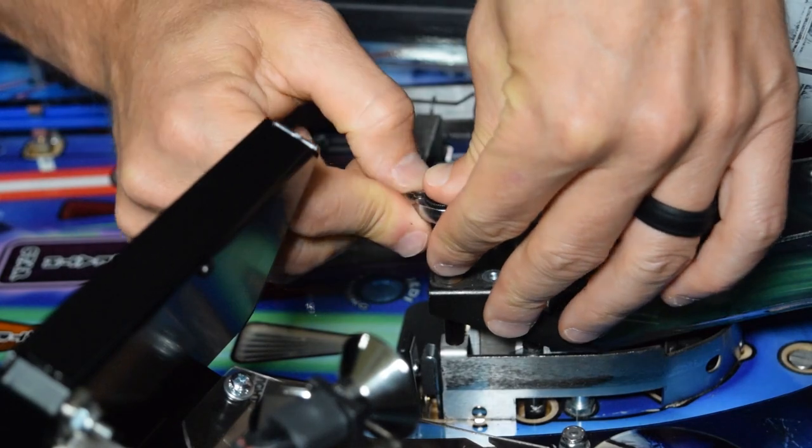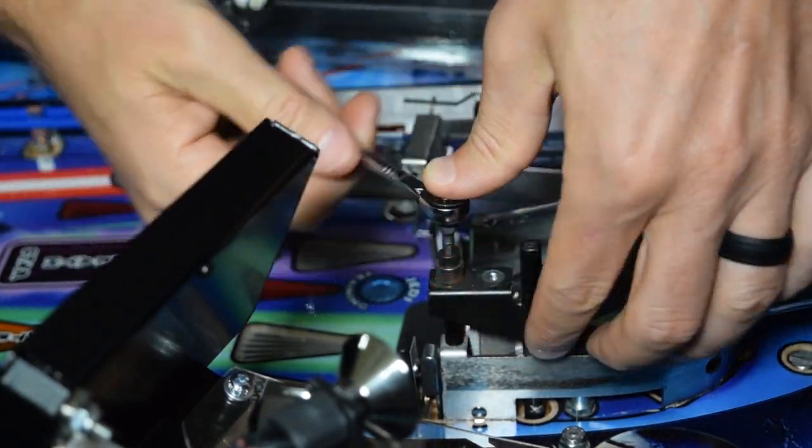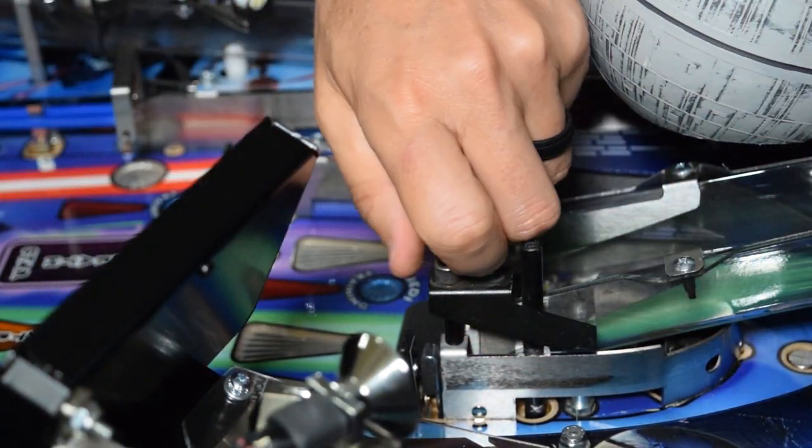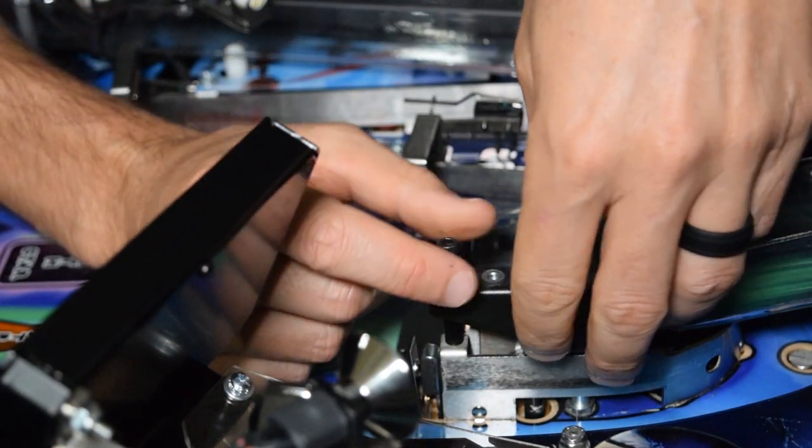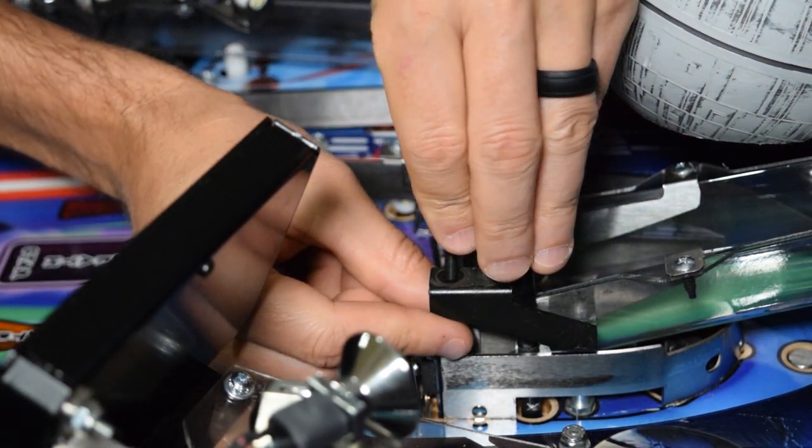Now take an Allen wrench or bit and loosen the screw seen here. There is a black spacer on the screw and although I did it here, you do not need to remove the spacer from the screw.